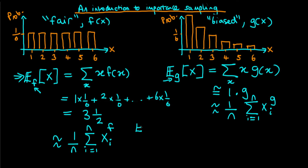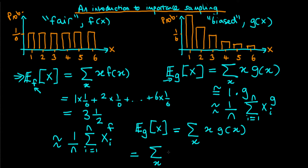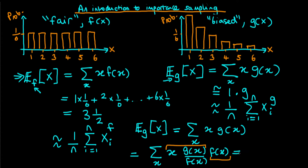To see this, write out the mean of the biased die: the expectation of x with respect to g equals the sum over x of x times g of x. Now I use a sleight of hand: rewrite this as the sum over x of x times g of x over f of x times f of x. The f of x terms cancel, recovering the original expression. But now I've introduced f of x, so I'm essentially taking the expectation of x times g of x over f of x with respect to f.